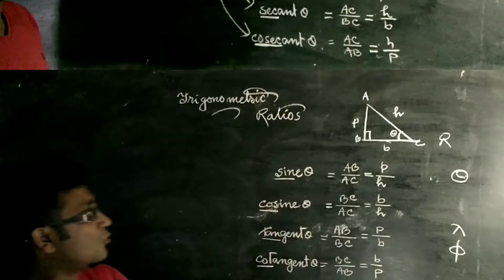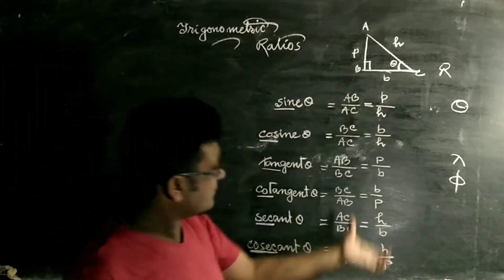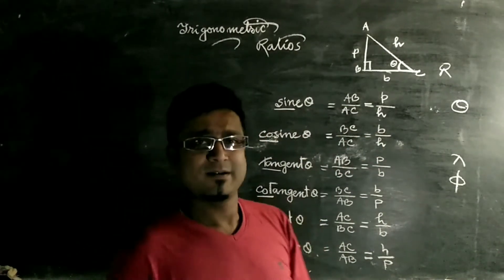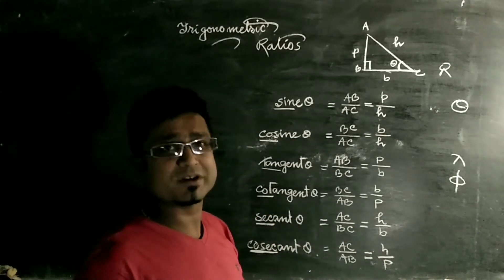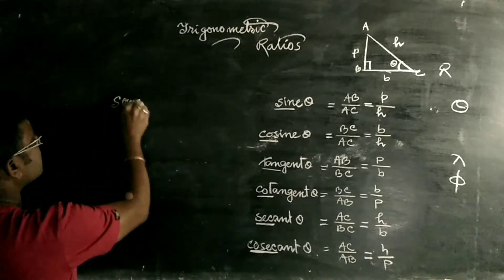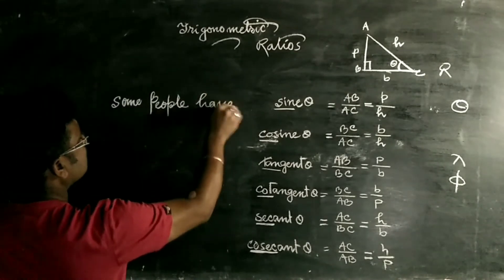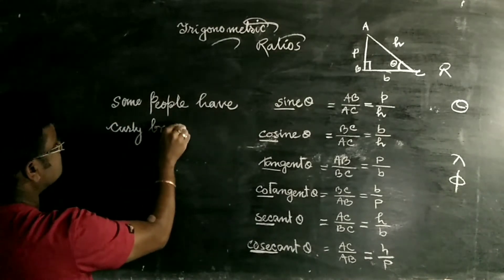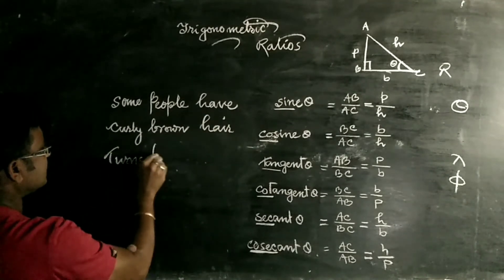Now you know what sine, cos, and tan are. These ratios can be difficult to remember, so let me show you a trick. Write this line: 'Some People Have Curly Brown Hair Turns Permanently Black.'